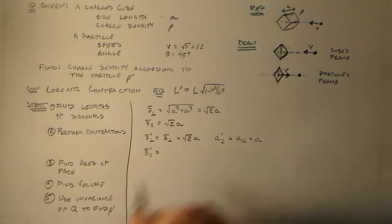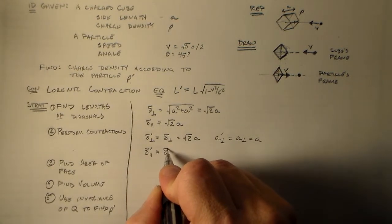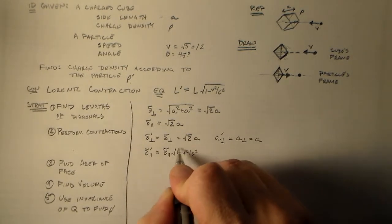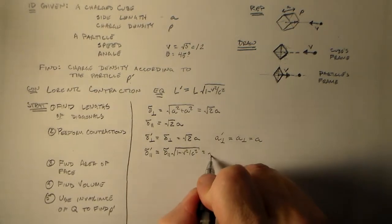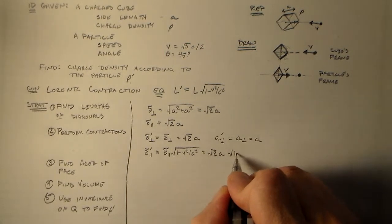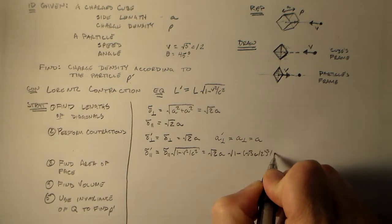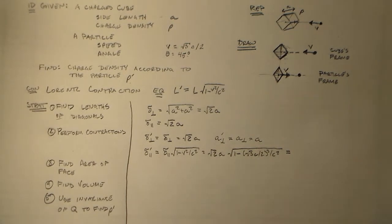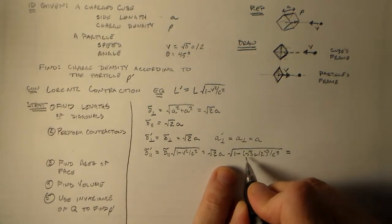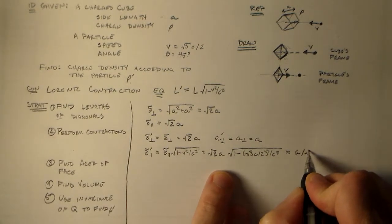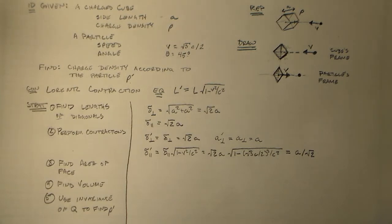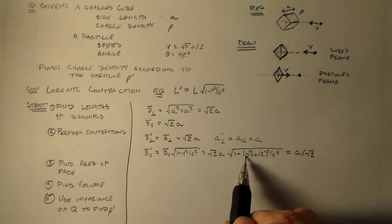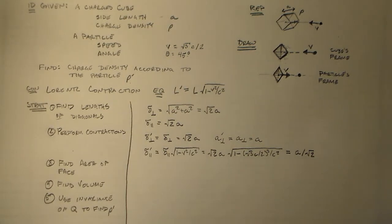So δ∥', then, we have to do the Lorentz contraction. So the Lorentz contraction says it's equal to δ∥ times √(1 - v²/c²). δ∥ is √(2A). And this thing is 1 minus (√3C/2)² over c². So this is 3 quarters, so we have 1 minus 3 quarters, that's 1 half. So this whole thing is 1 half, so we have A over √2.